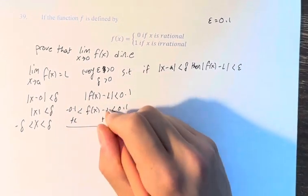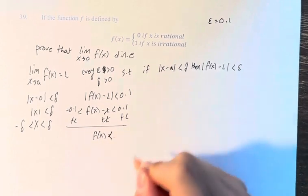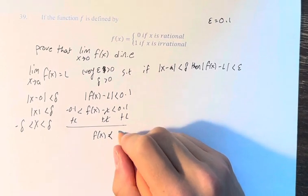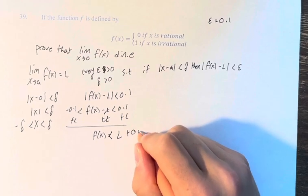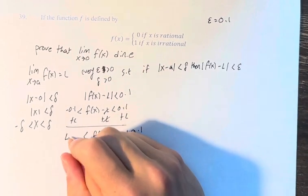Adding l to both sides, we're basically saying the function for whatever we say the limit is going to be equal to, it's going to be between l plus 0.1 and l minus 0.1.